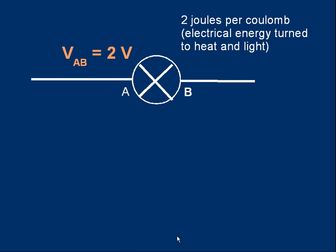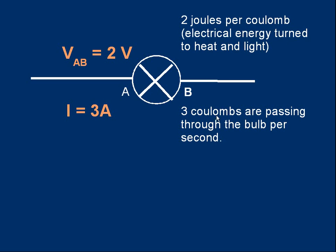Let's think about what happens in a circuit. Here we've got a bulb. I've labeled the sides of the bulb A and B. Let's suppose there's a voltage, a potential difference between A and B, two volts. What does that mean? One way to interpret voltage is the amount of energy transferred per coulomb of charge that passes through something. So when we say there's a potential difference of two volts, it means that two joules per coulomb of electrical energy are turned to heat and light. You'll also remember what current means. A current of three amps means three coulombs per second.